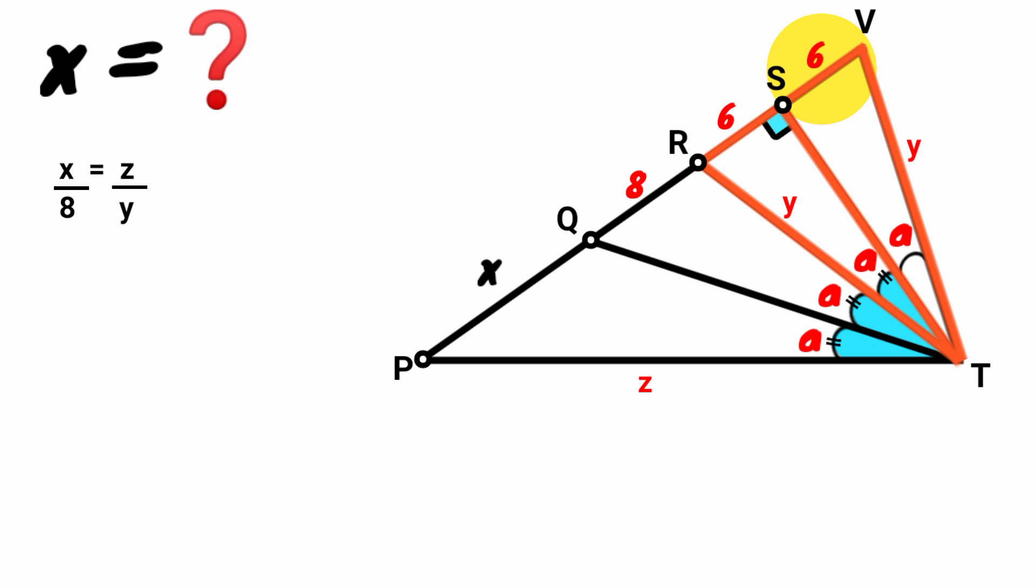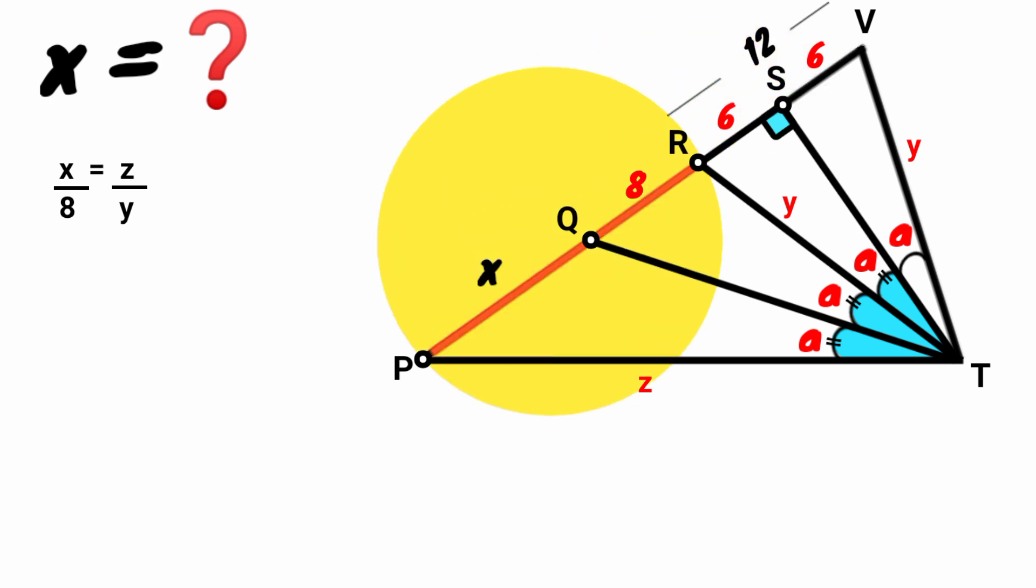Okay, now this whole segment RV, its length is the summation of this 6 and this, that is 6 plus 6, which is 12. That of this line PR is the summation of this x and this 8, so it is x plus 8.